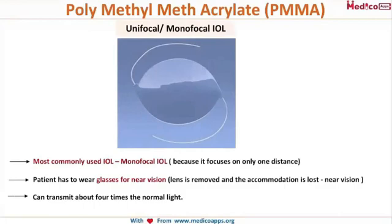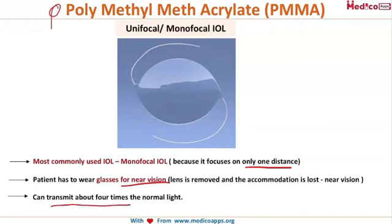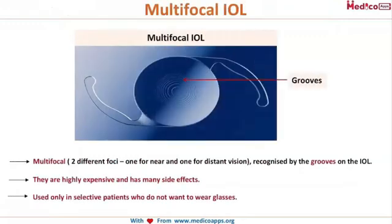The first and most commonly used IOL type is made of polymethyl methacrylate (PMMA) — a very commonly asked question. It is a monofocal IOL used only for distance vision; near vision must be corrected with glasses because without the natural lens there is no accommodation. One feature is that it can transmit four times more light than normal, so patients may perceive more blue-colored vision after cataract surgery.